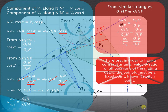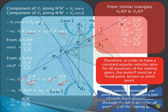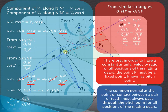In order to have a constant angular velocity ratio for all positions of the mating gears, the point P must be a fixed point — and that fixed point is known as the pitch point. In other words, the common normal at the point of contact K between the pair of gears must always pass through the pitch point P. This is the fundamental condition for the law of gearing.